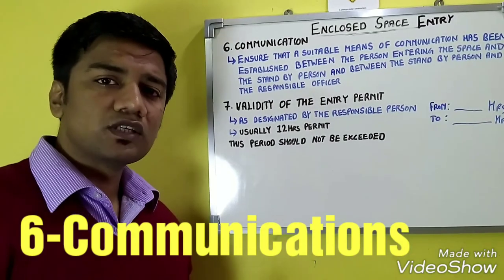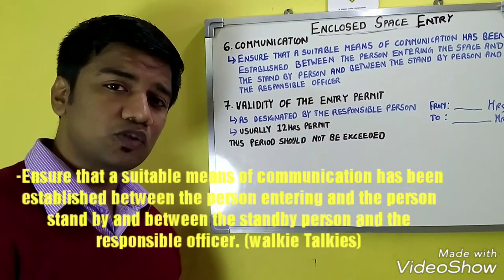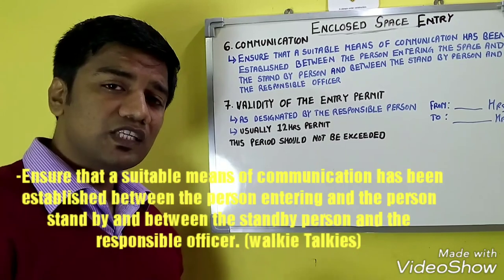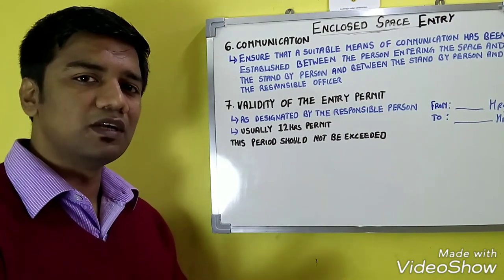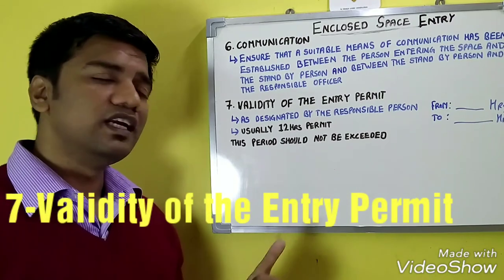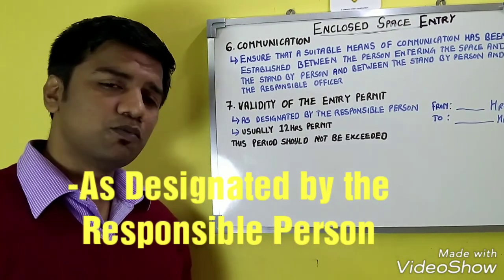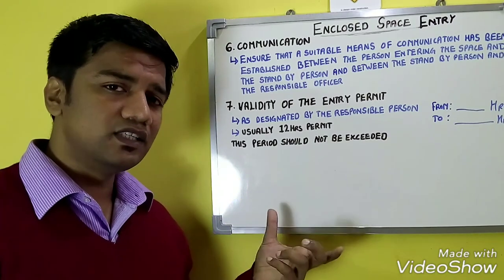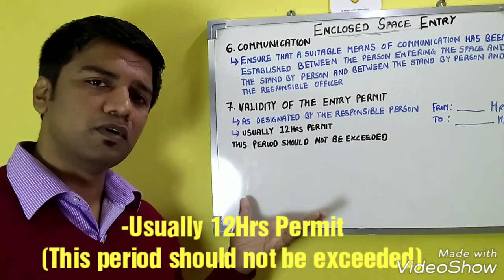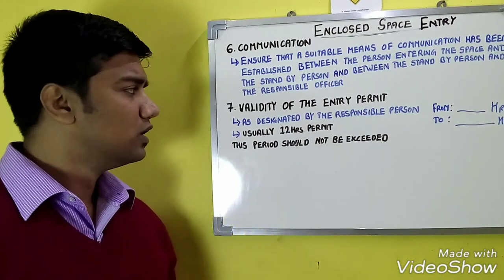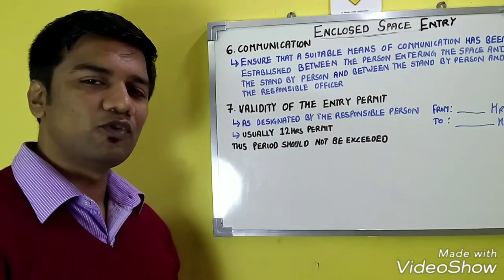Regarding communication: ensure that proper and adequate means of communication has been established between the person entering the enclosed space and the person on standby, as well as between the standby person and the responsible officer. Regarding validity of the entry permit: the validity is designated by the responsible person, usually the master. He decides the hours during which the permit is valid — usually it is a 12-hour permit — and this period should not be exceeded. These are all the steps which have to be followed in enclosed space entry.